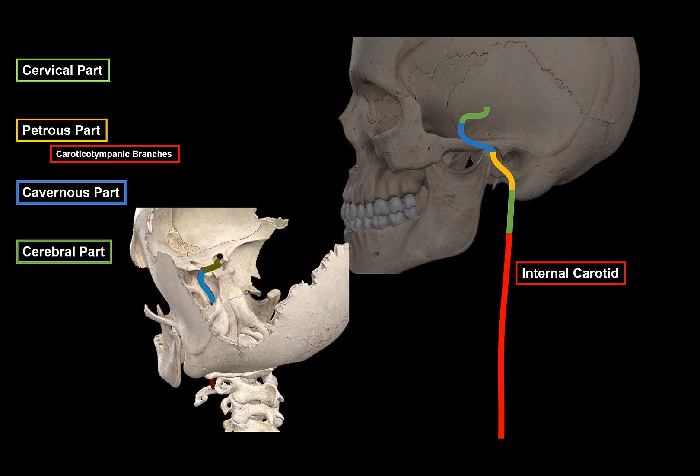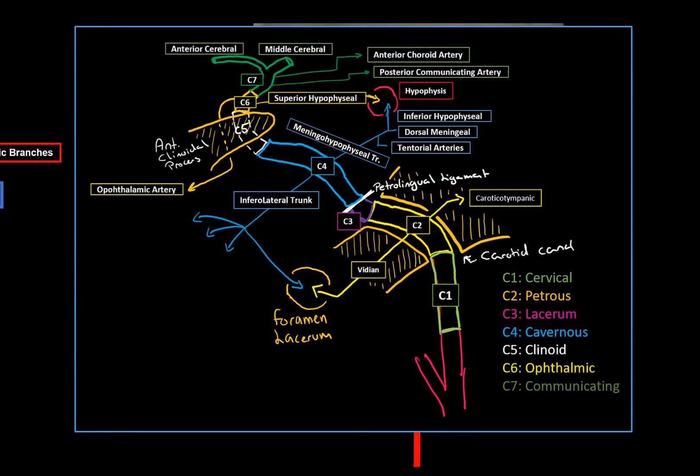The internal carotid can also be divided into seven segments. There are specific side branches for each segment, except the cervical segment, lacerum segment, and clinoid segment — C1, C3, and C5 — which are without side branches. You can pause and take a mental picture, but the focus here is on the terminal branches of the artery, as those are the most important ones.